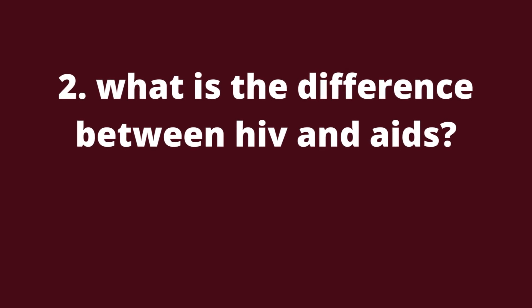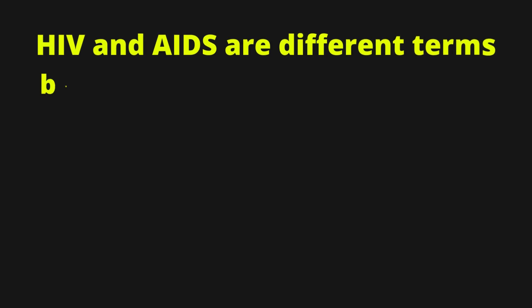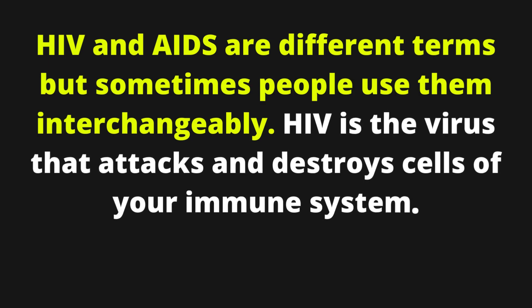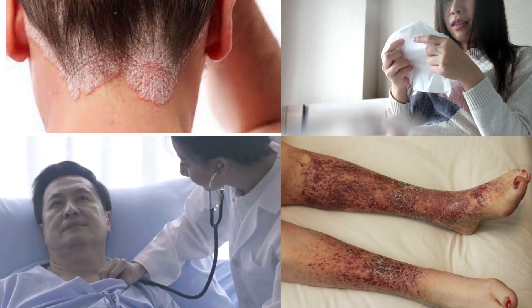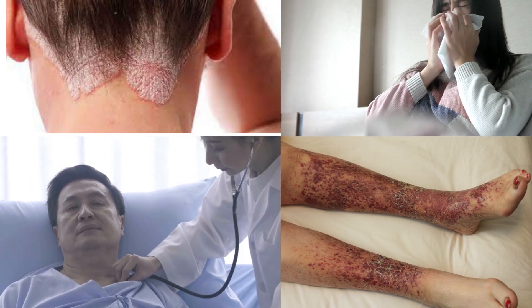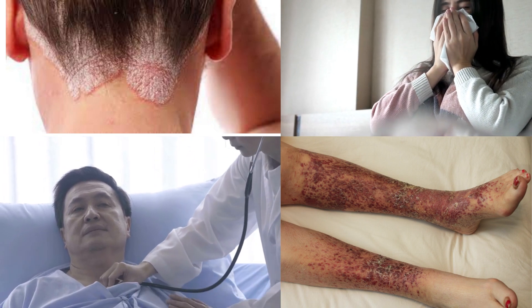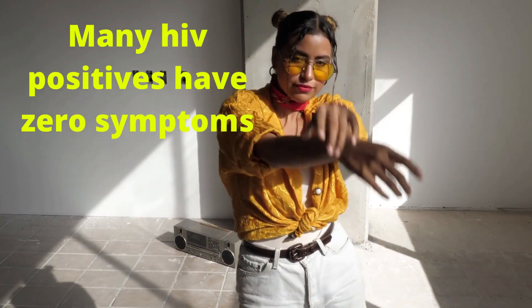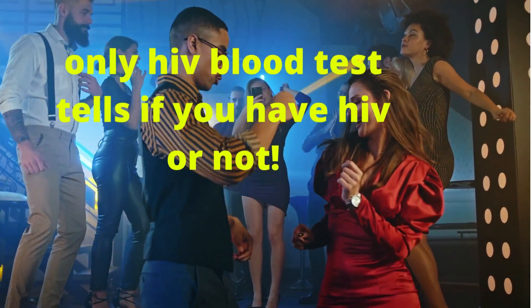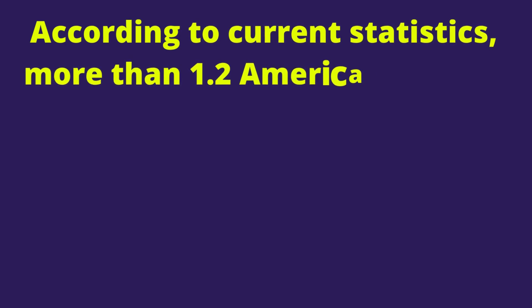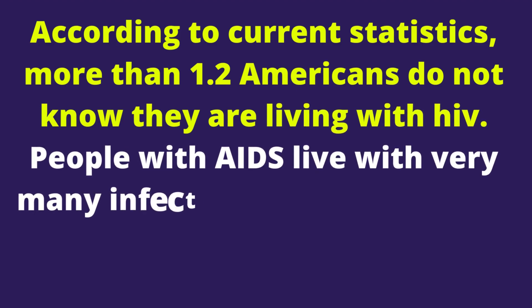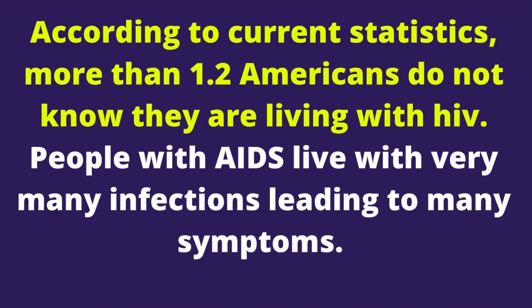What is the difference between HIV and AIDS? HIV and AIDS are different terms but sometimes people use them interchangeably. HIV is the virus that attacks and destroys cells of your immune system. AIDS on the other hand is a group of infections that take advantage of your weakened immunity to attack your body. Many people out there are living with HIV but have absolutely no symptoms. The only way to know if you have HIV or not is by taking an HIV blood test. According to current statistics, more than 1.2 million Americans do not know they are living with HIV. People with AIDS live with very many infections leading to many symptoms.